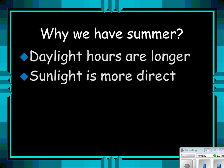Why do we have summer? The daylight hours are longer, so we have more time to heat up. The sunlight is more direct because sunlight hits us straight down, heating us up more.